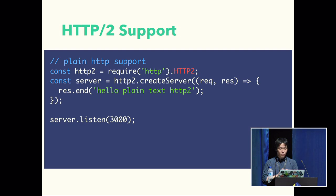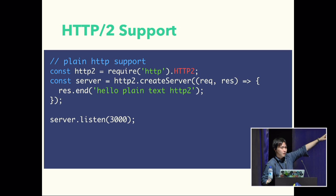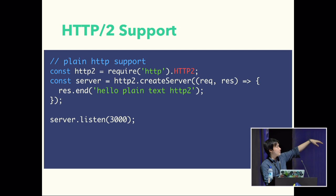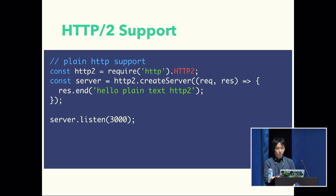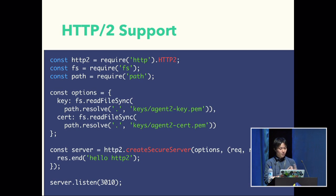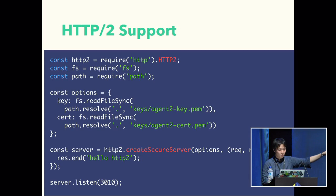I'll introduce the HTTP/2 API. Here is a sample HTTP/2 code for Node Core. You require 'http2' to get the HTTP/2 module. The other API is similar to the current HTTP module — the usage is not so different. We need to use http2.createSecureServer(), which is a little bit different from the current HTTP module. I'll show you a demo using this code.